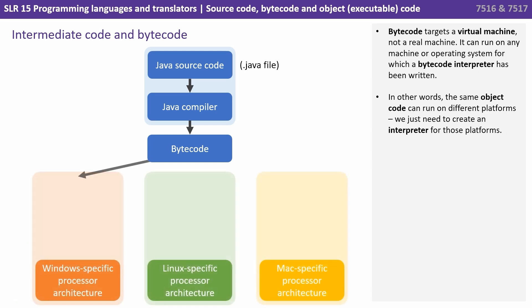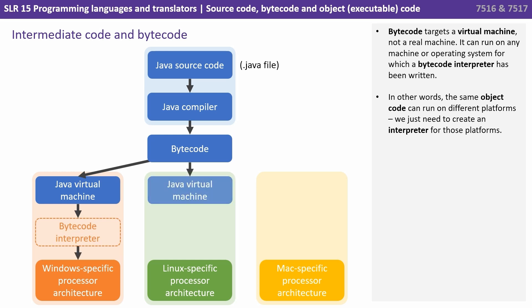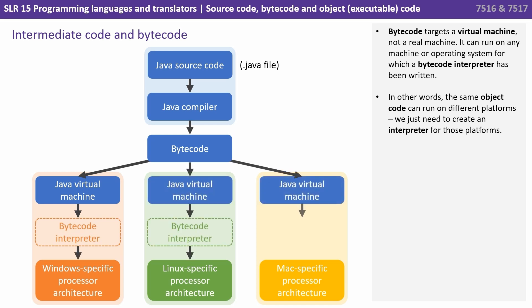Bytecode targets a virtual machine and not a real machine. It can run on any machine or operating system for which a bytecode interpreter has been written. In other words, the same object code can now run on different platforms — we just need to create interpreters for each of those platforms.